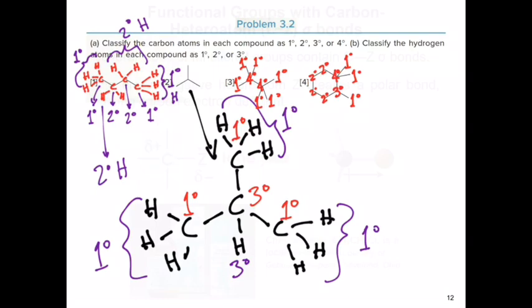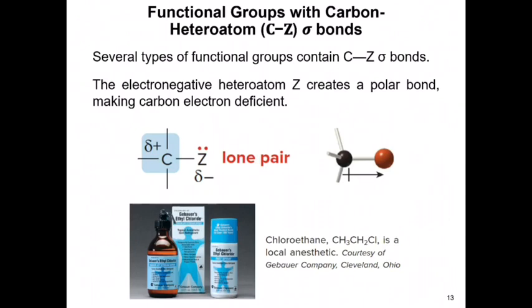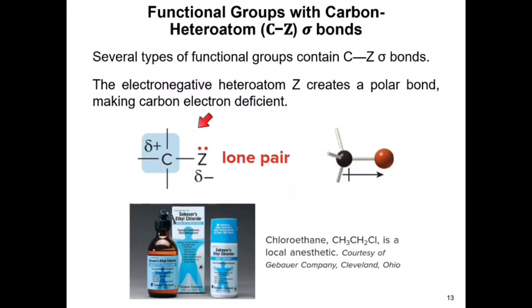There are many different types of functional groups. Some contain carbon-to-heteroatom sigma bonds, where Z represents a heteroatom such as fluorine, bromine, iodine, chlorine, sulfur, phosphorus, oxygen, or nitrogen. Because of the difference in electronegativity between carbon and the heteroatom, this bond is polar, creating a separation of charge. Carbon receives a partial positive charge making it electron-deficient, while the more electronegative heteroatom receives a partial negative charge making it electron-rich. This creates reactive sites within the molecule.